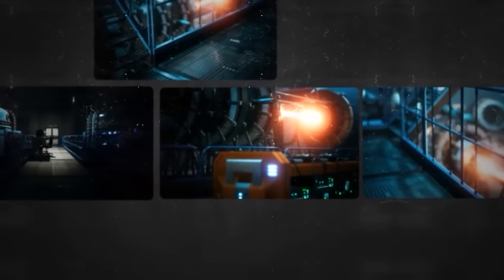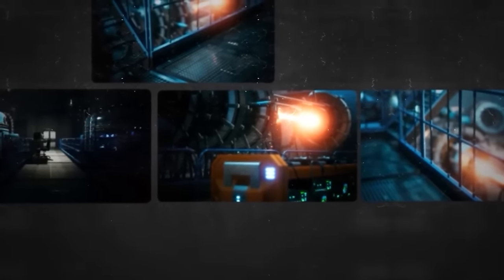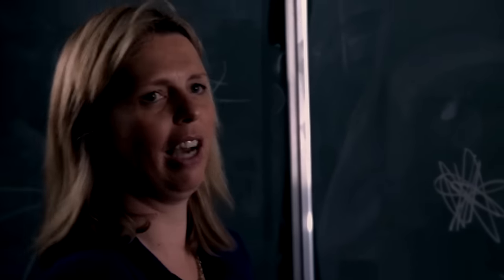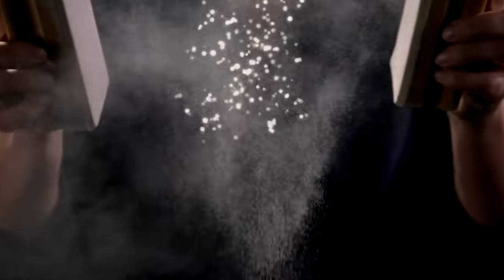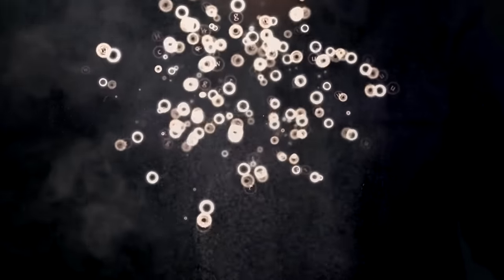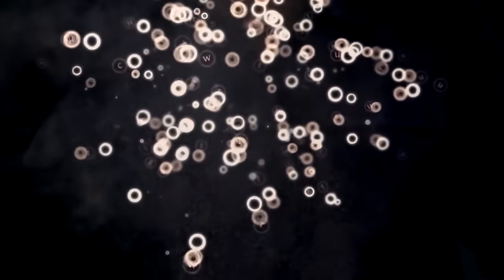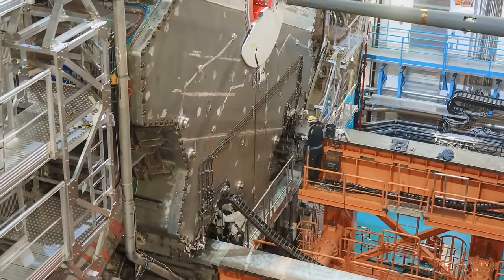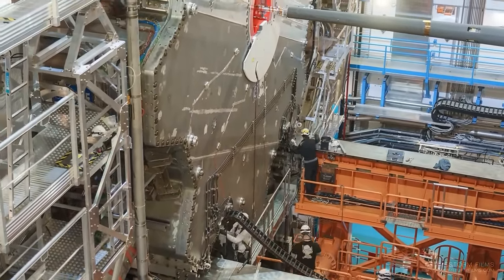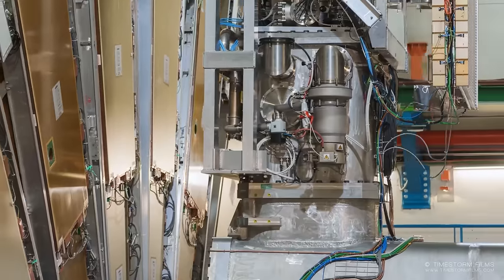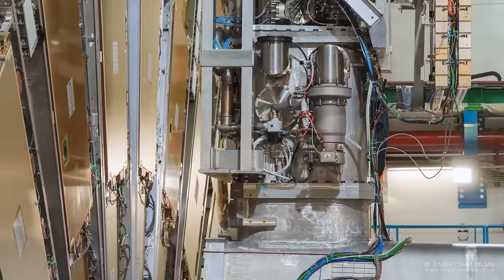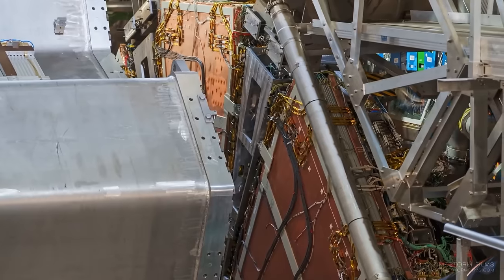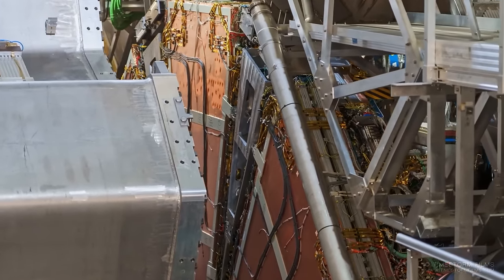The superconducting electromagnets contain 1,232 dipole magnets, 15 meters long, that steer two beams containing protons in opposite directions. These magnets operate at minus 271 degrees Celsius and generate magnetic fields 100,000 times stronger than the Earth's. The magnets are cooled to operating temperature using over 80 tons of liquid helium, making the LHC the largest cryogenic facility ever built.